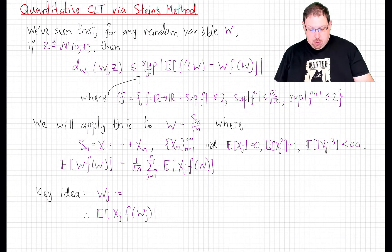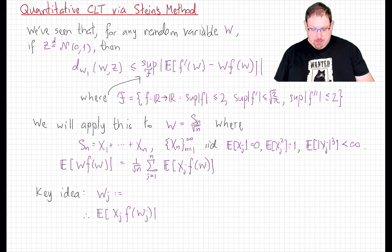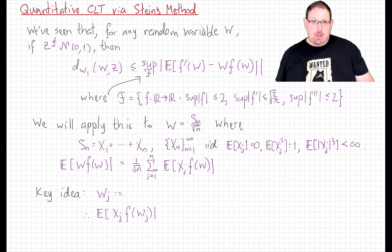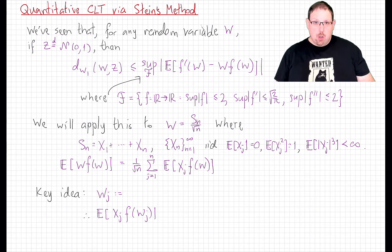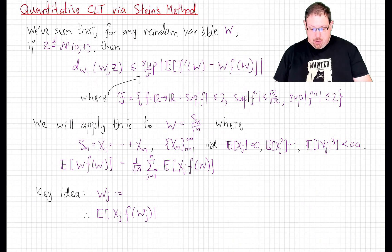Now we're going to apply this to a random variable w which is a standardized sum of iid variables. We'll take a sequence x_n of iid random variables which are centered and have variance 1. We're also going to assume that they are L3, not just L2. In fact, we'll see that the L3 norm is what controls the Wasserstein distance in this case. We'll now calculate each of the two terms in turn, starting with the first one.